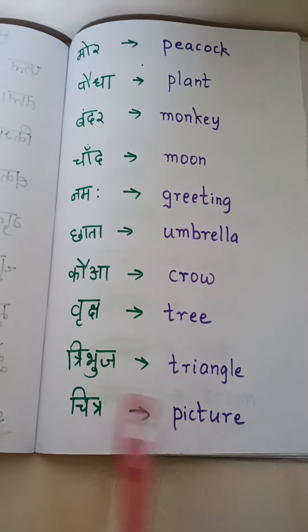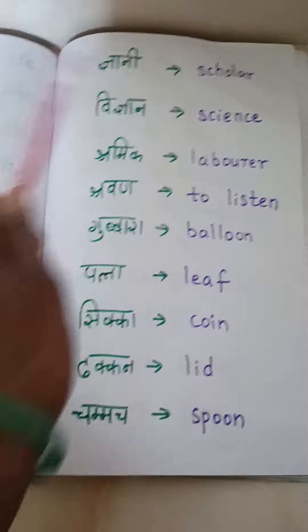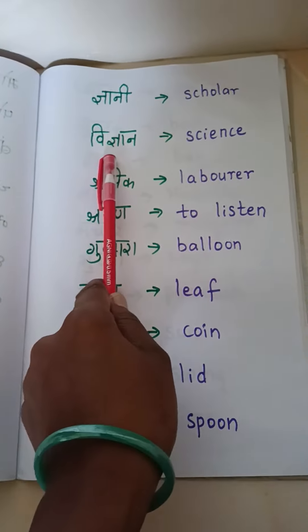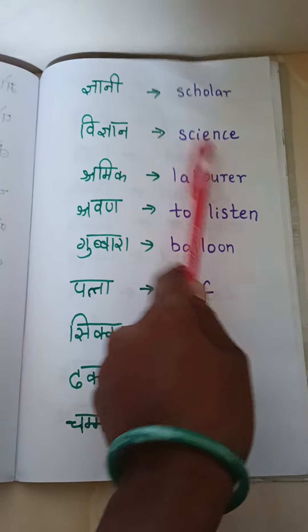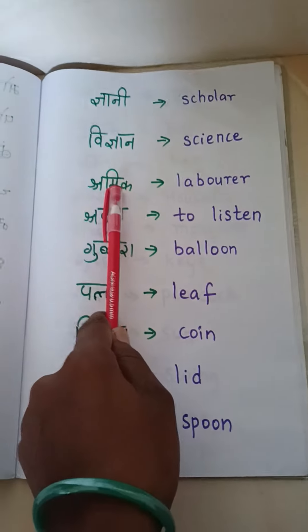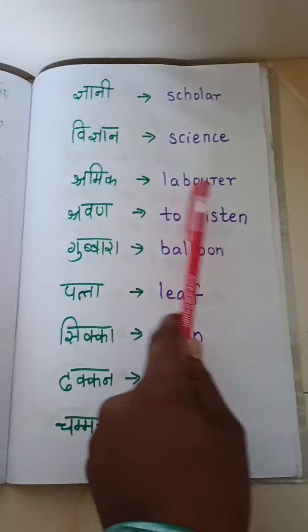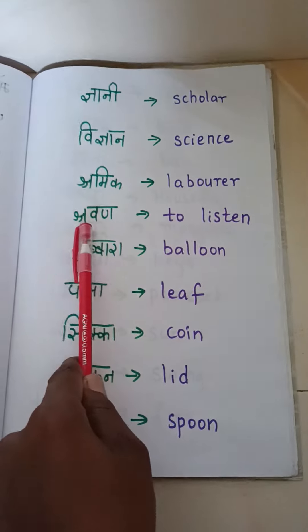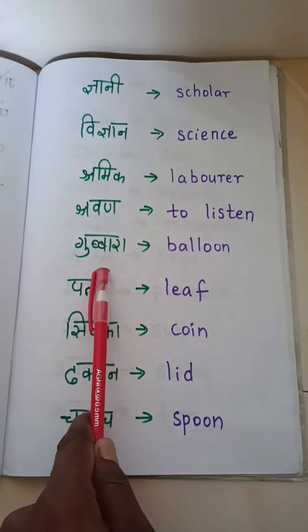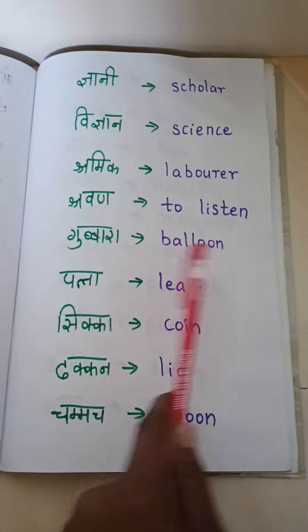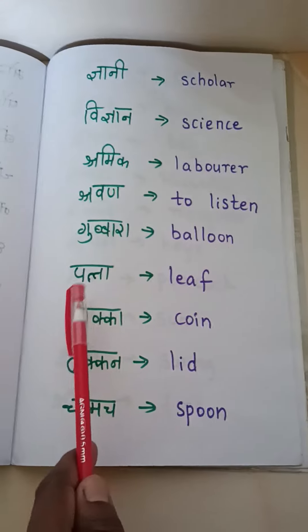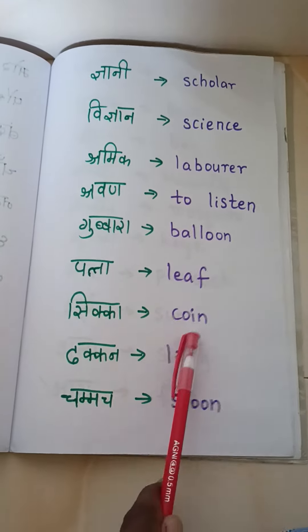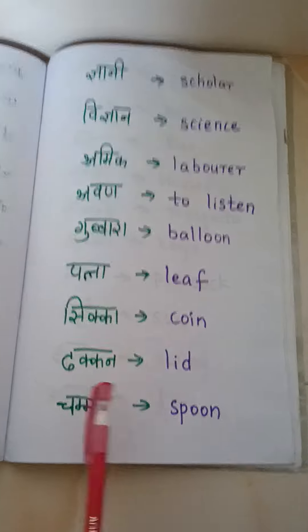Chitra — picture. Nyani — scholar. Vignan — science. Shramik — laborer. Shravan — to listen. Gubbara — balloon. Pata — leaf. Sikka — coin.